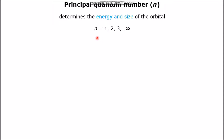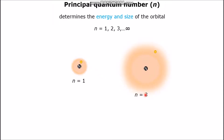What does N tell us about the position of the electron? The smaller the N, the closer the electron is to the nucleus of the atom. But the larger the N, the farther away the electron is from the nucleus of the atom.